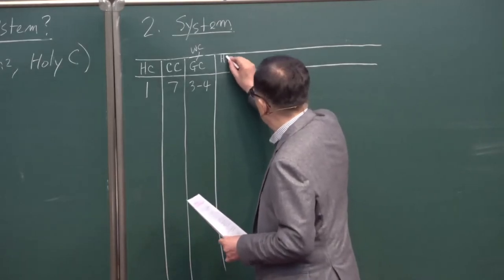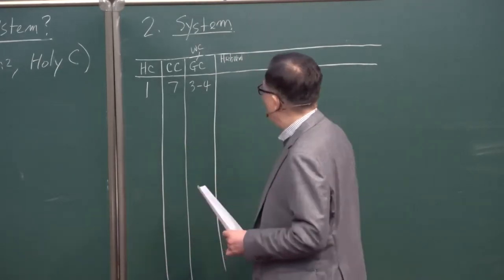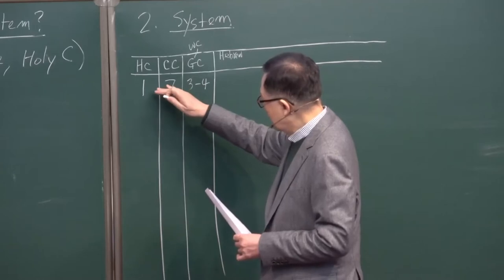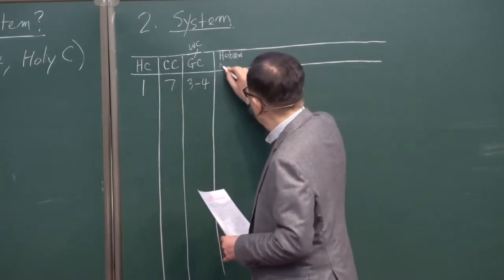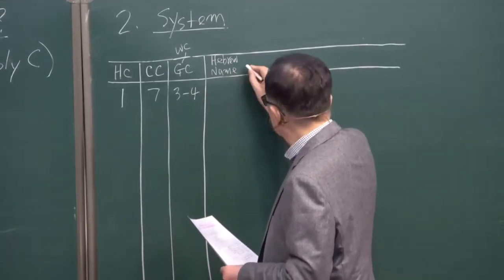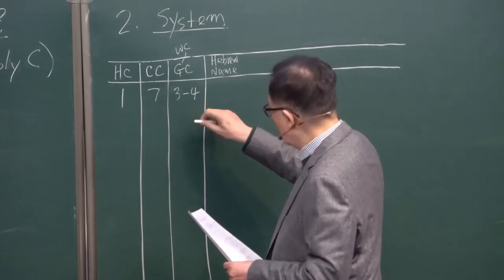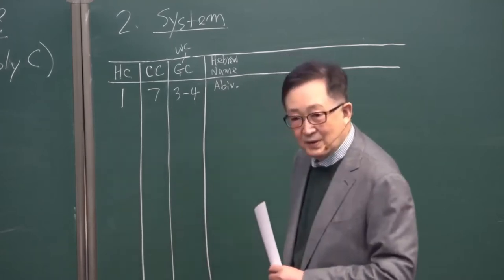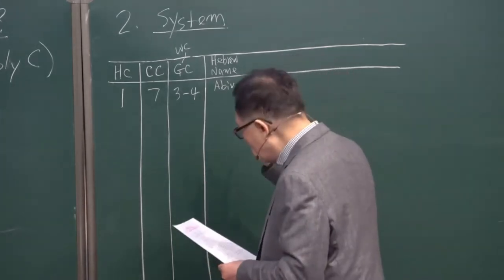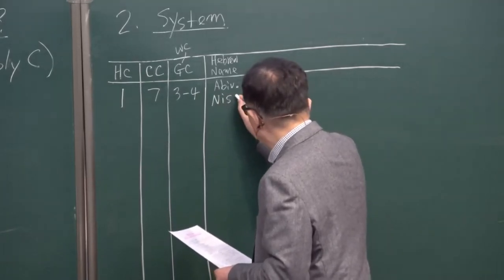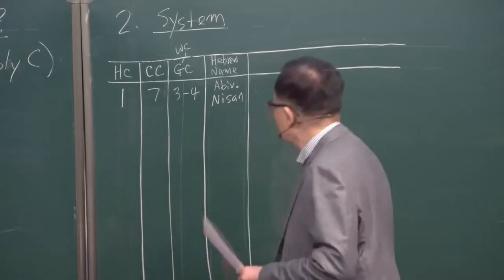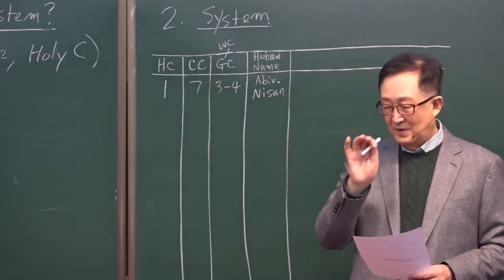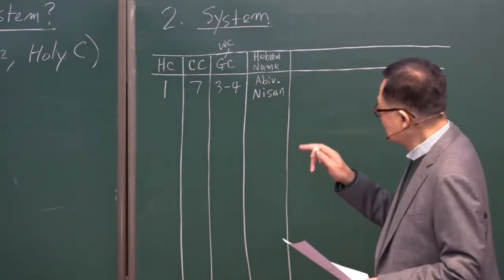In Hebrew, people always have a name for each month. Hebrew names for the particular month. This particular month they call Abib. Sometimes Abib and Nisan.